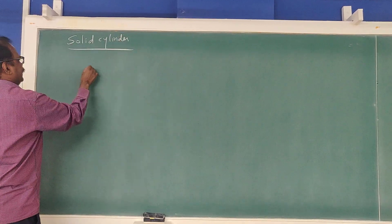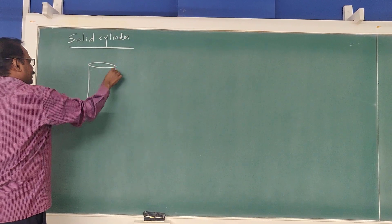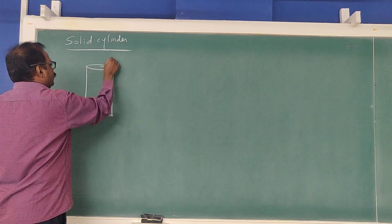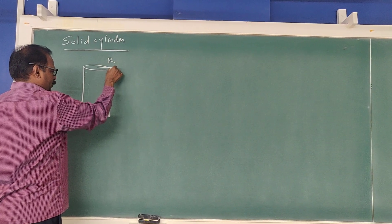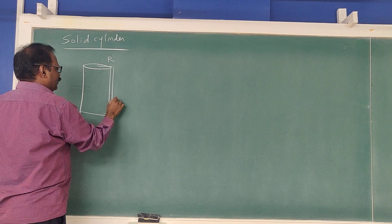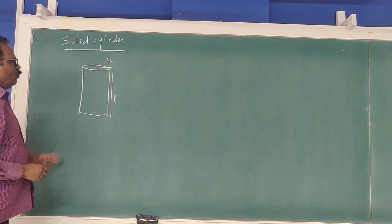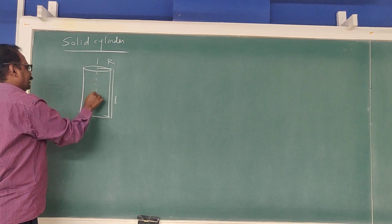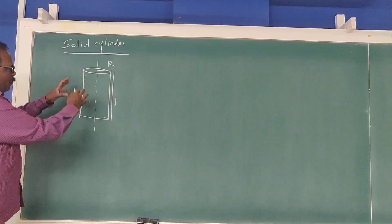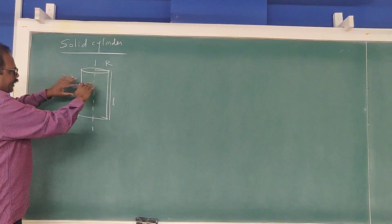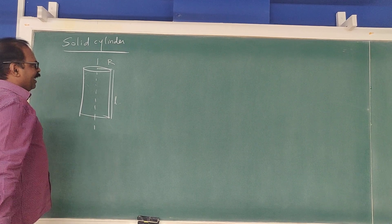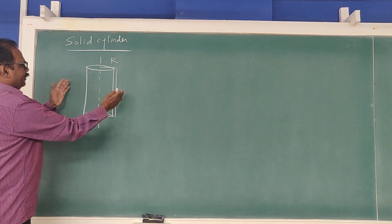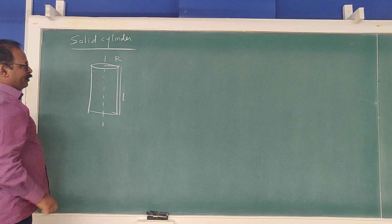Consider a solid cylinder of radius R and length L. We want to find the moment of inertia of this about its axis. Unlike a hollow cylinder where mass is at equal distance from the axis, for a solid cylinder the mass is distributed from the axis all the way out to radius R.